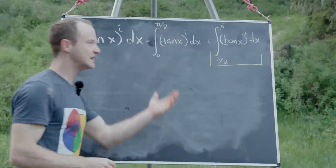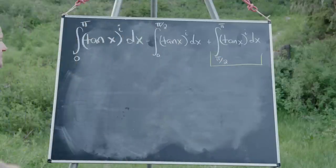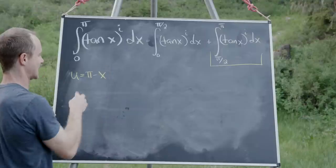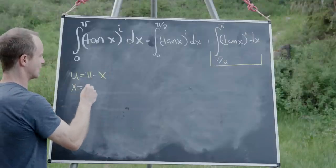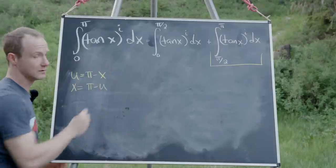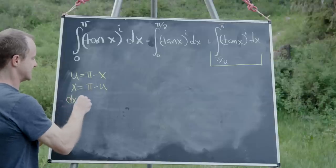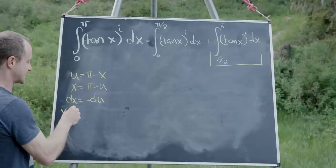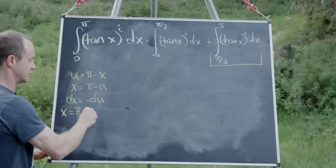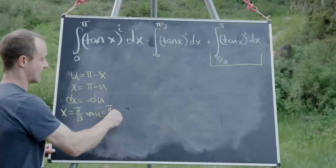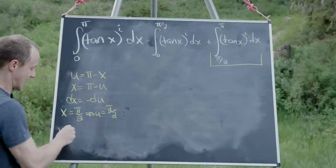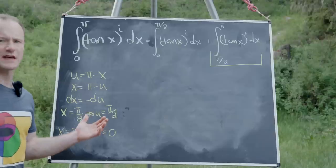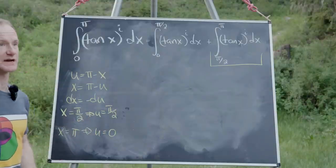We'll find the value of the second integral by performing a u-substitution. Let u equal π minus x, which makes x equal to π minus u, and dx equals minus du. When x equals π/2, u also equals π/2, and when x equals π, u equals 0. That takes care of all our change-of-variables work.